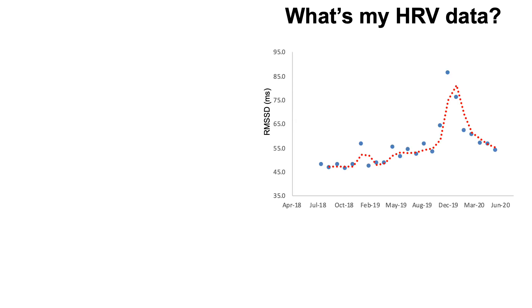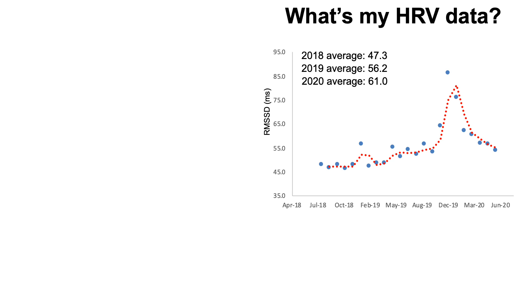Here's my data for the past 23 months. My fitness tracker uses the RMSSD metric for heart rate variability. We can see a slowly increasing trend, with a massive spike in the winter of 2019 into 2020. My average heart rate variability was 47.3 from August through December 2018, rose to 56.2 for the full year of 2019, and reached 61 for the first six months of 2020. I've achieved this by better integrating rest, not overtraining, and monitoring the intensity and duration of my workouts.